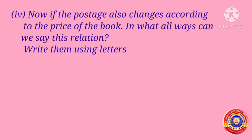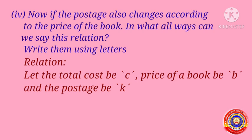Now if the postage also changes according to the price of the book, in what all ways can we say this relation? Write them using letters. Let the total cost be C, price of book be B, and the postage be K. Since the postage also changes according to the price of the book, postage is denoted by the letter K. Then we can write the relations as B plus K is equal to C, C minus K is equal to B, and C minus B is equal to K.